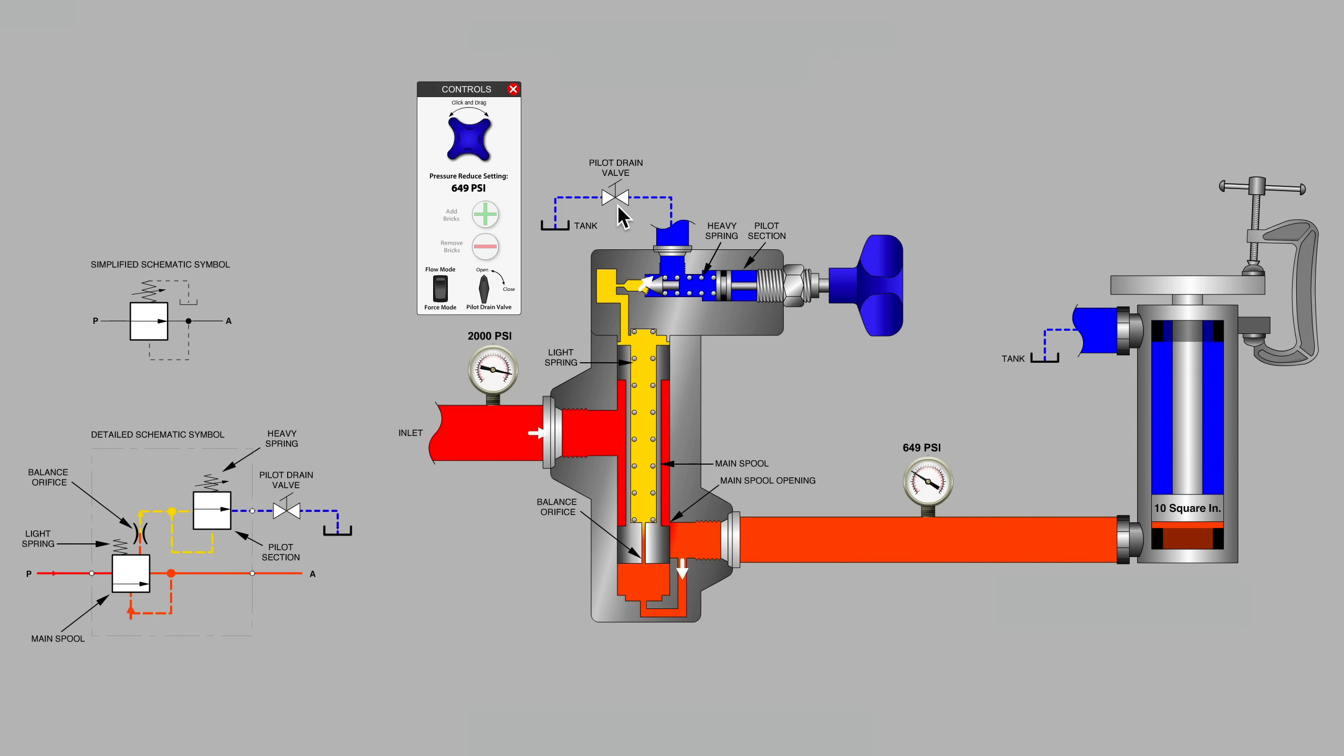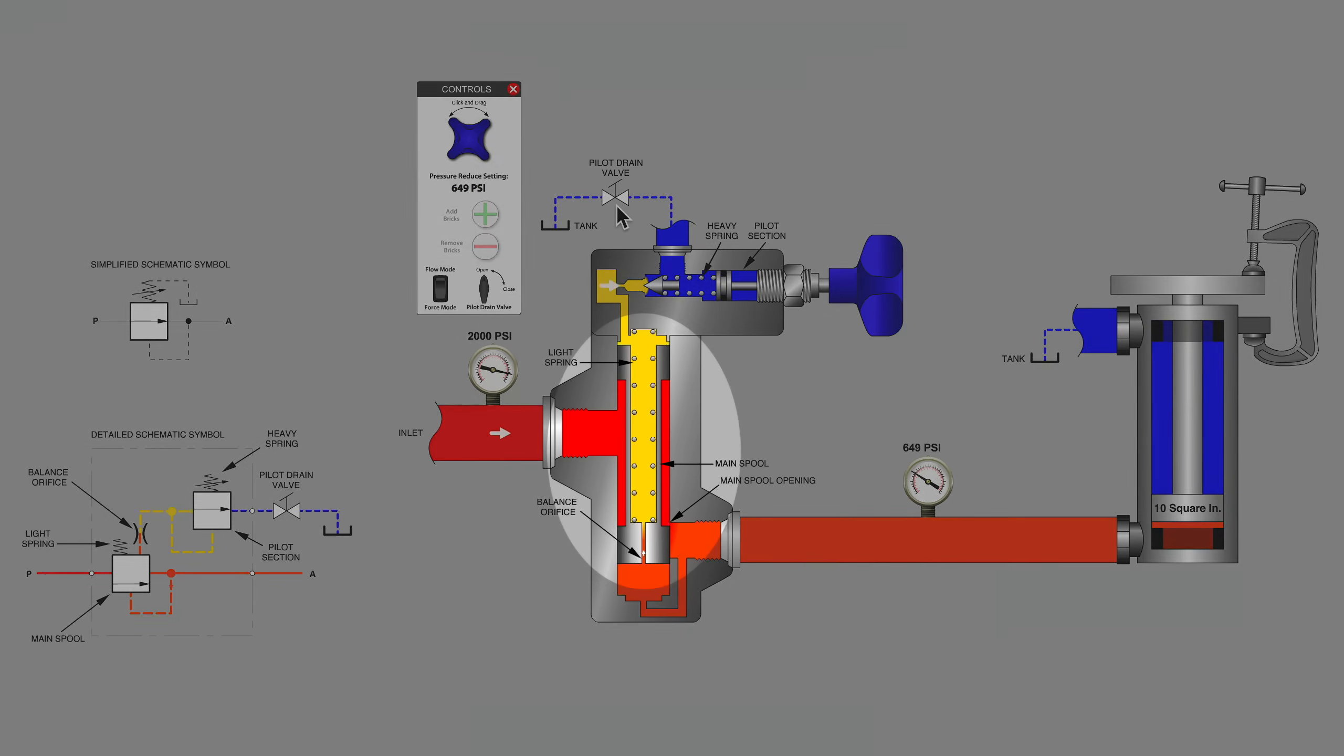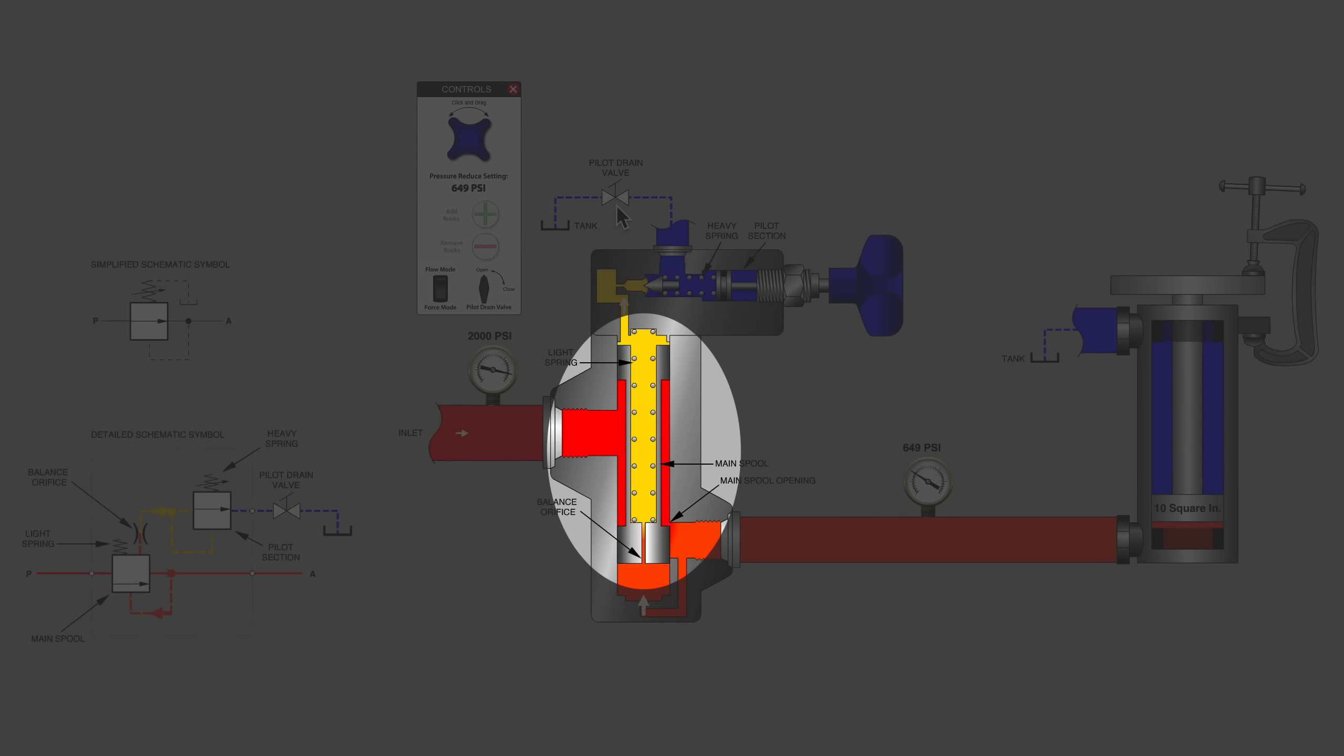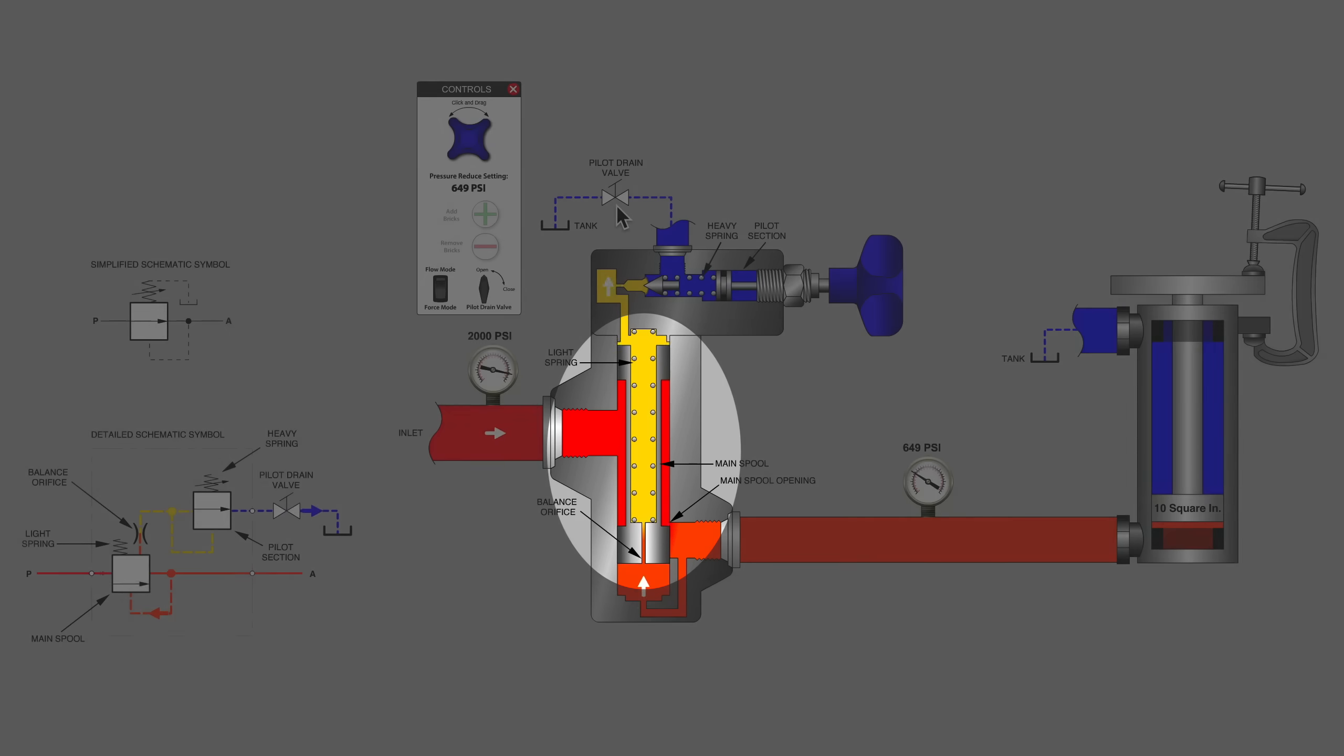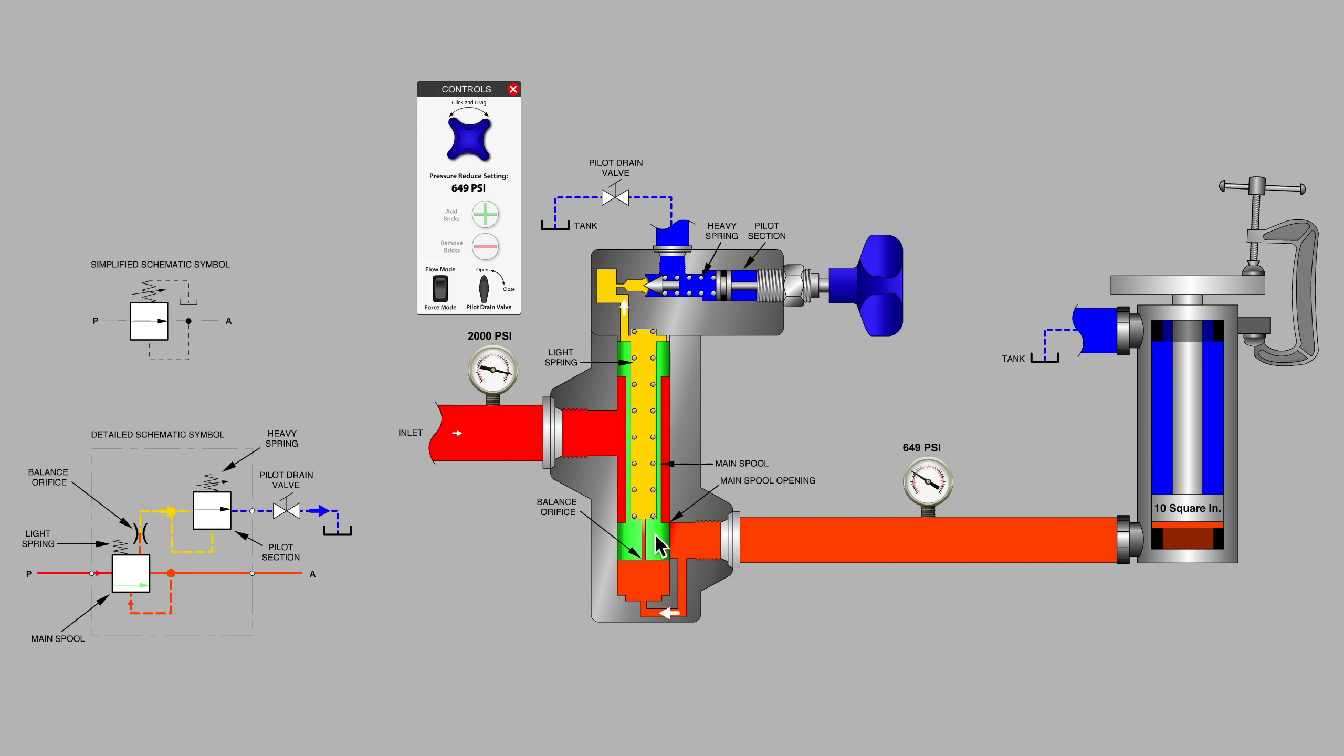But before I close the pilot drain valve, let's have a look at the main control spool in the pressure-reducing valve main body. Dropping down to the bottom here, notice the amount of piston surface area on the bottom of the spool. Now let's pass through the balance orifice and notice that there is some surface area inside at the bottom.